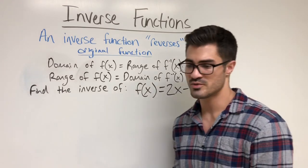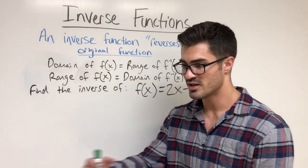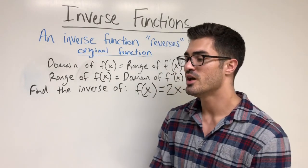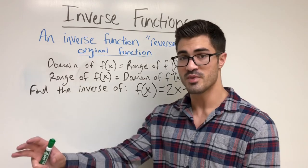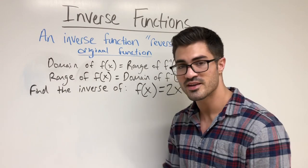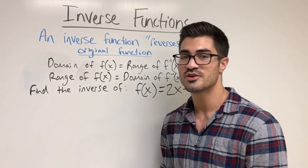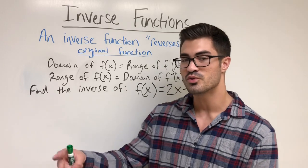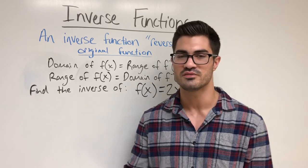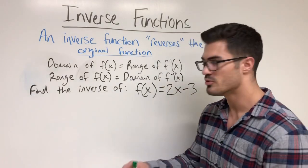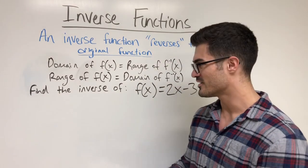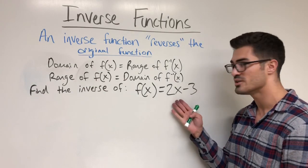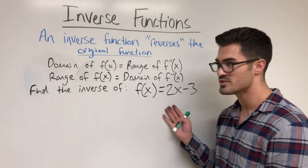These rules are really useful — when you're given a function and its inverse and need to find the domain and range of both, if you find the domain of the original you can write that as the range of the inverse, and vice versa. You really only have to find two of those things instead of all four. Now let's find the inverse of f of x equals 2x minus 3.